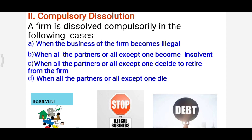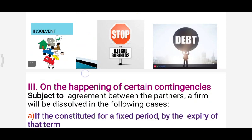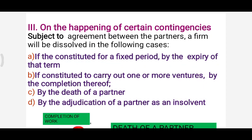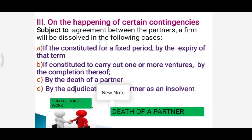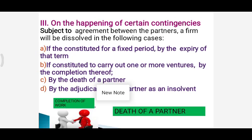The third mode of dissolution is on happening of certain contingencies — certain special events. Subject to agreement between the partners, the firm can also be dissolved in the following cases: first, if the firm is constituted for a fixed time period or fixed term, then after expiry of that term the firm has to be dissolved — the firm itself dissolves.